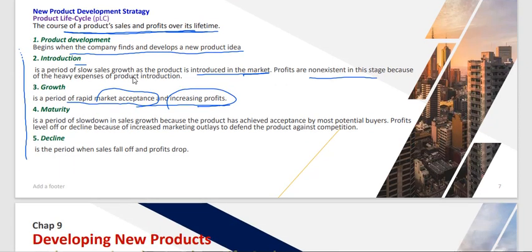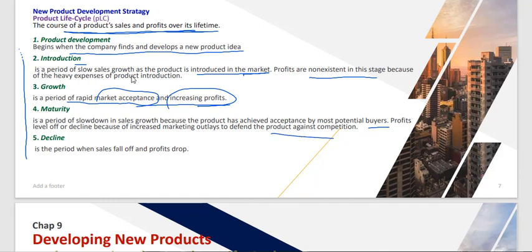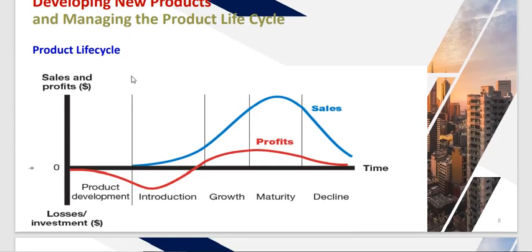The next stage is maturity — a period of slowdown in sales because the product has been accepted by most potential buyers, sales become constant, and profits level off or decline due to increased marketing expenditures to defend the product against competition. The last stage is decline, where sales fall off and profits drop after the maturity stage.